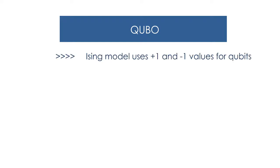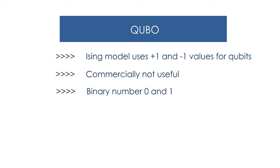As we already know, the Ising model usually uses plus one and minus one values for the qubits. However, this is not useful for commercial purposes. The commercial market uses binary numbers zero and one for computer science, so that's why we have the QUBO binary value solver for the Ising model.